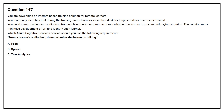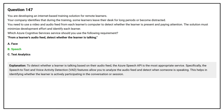Option A, Face. Option B, Speech. Option C, Text Analytics. The correct answer is option B, Speech. To detect whether a learner is talking based on their audio feed, the Azure Speech API is the most appropriate service. Specifically, the speech-to-text and voice activity detection features allow you to analyze the audio feed and detect when someone is speaking. This helps in identifying whether the learner is actively participating in the conversation or session.